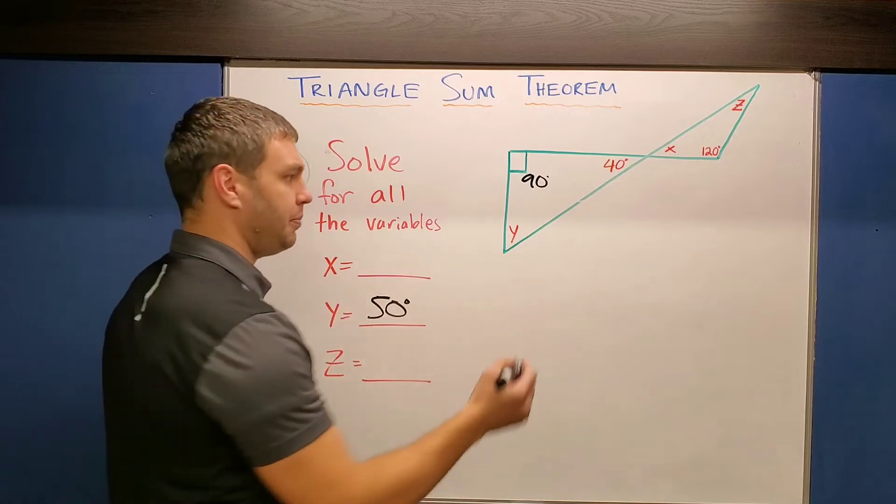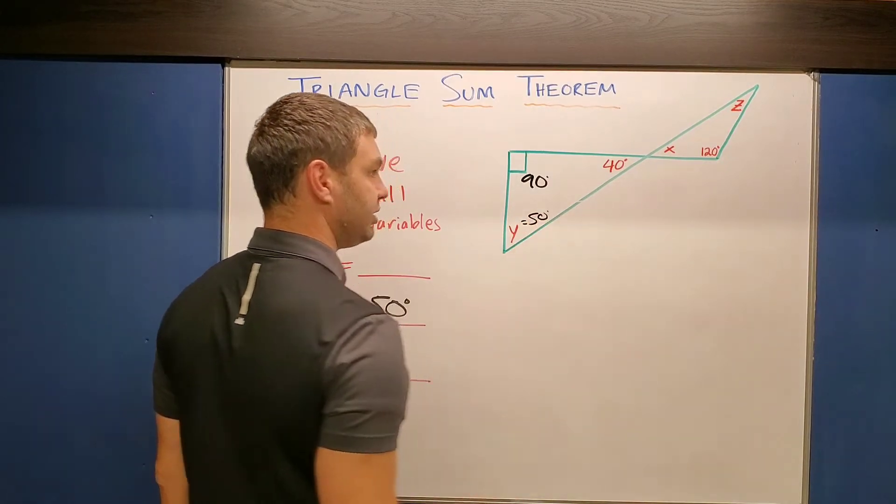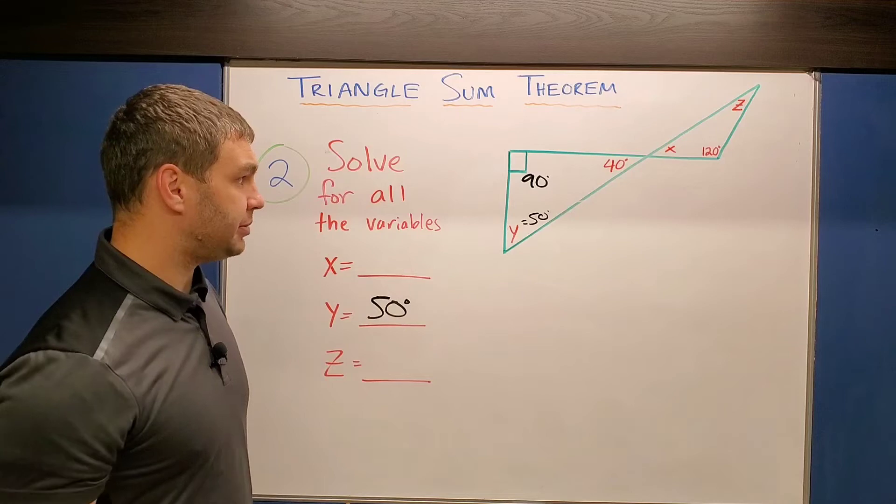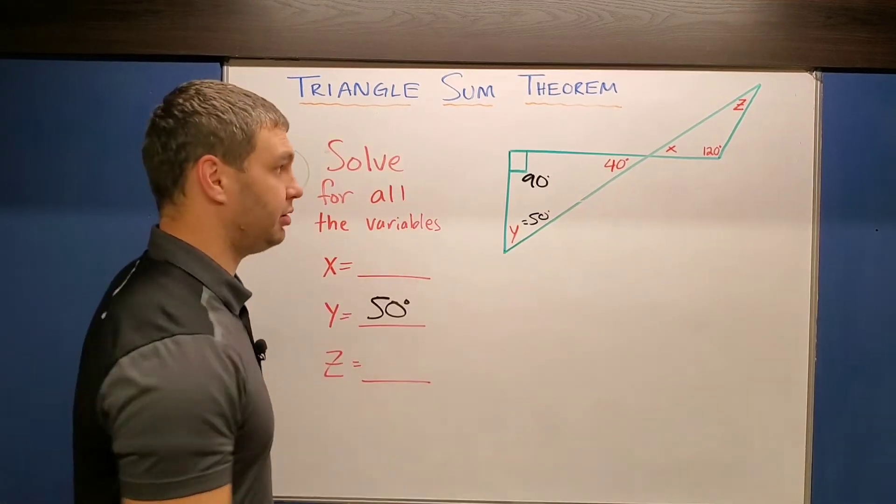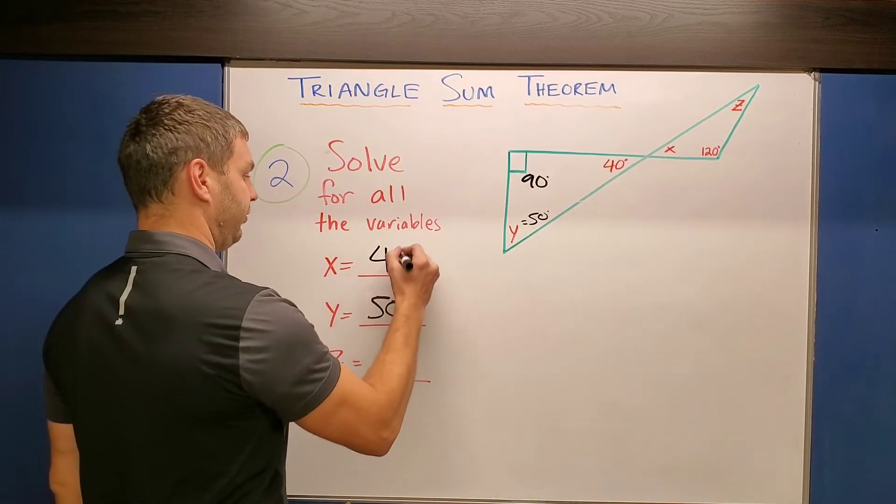Then I always like to mark up my picture just so I know what these measures are in case I need to use them again later. The next thing I've seen in my picture is that 40 and X are vertical angles. Vertical angles are congruent to each other, so X has to also be 40 degrees.